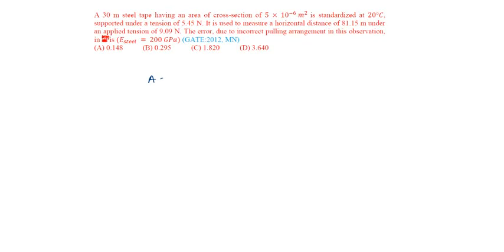Area of cross section is given as 5 × 10^-6 meter square. Standard pull is given as 5.45 newtons. Actual pull applied is 9.09 newton.